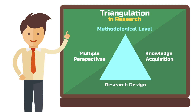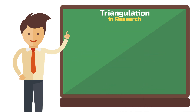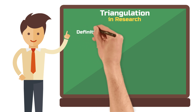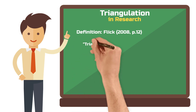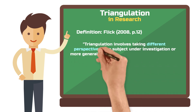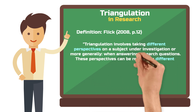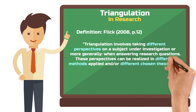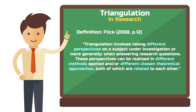While triangulation is commonly associated with qualitative research, it can also be applied in quantitative and mixed methods research. To avoid confusion, let's look at the definition from Flick: triangulation involves taking different perspectives on a subject under investigation, or more generally when answering research questions. These perspectives can be realized through different methods applied and/or different theoretical approaches. The goal is to gain deeper insights than would be possible with just a single method or a single theoretical perspective.